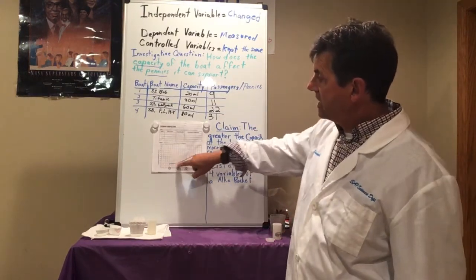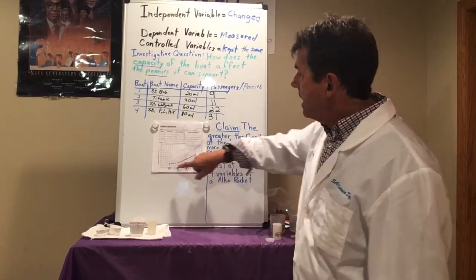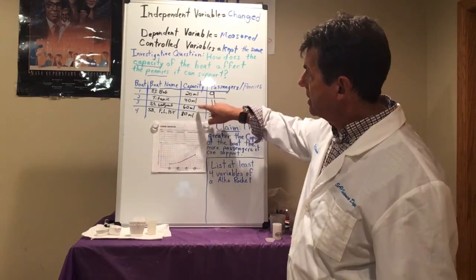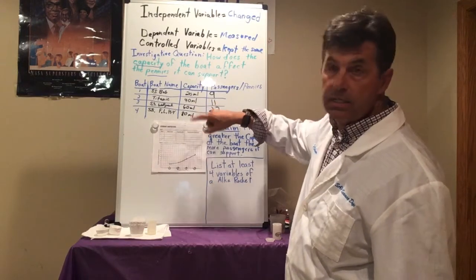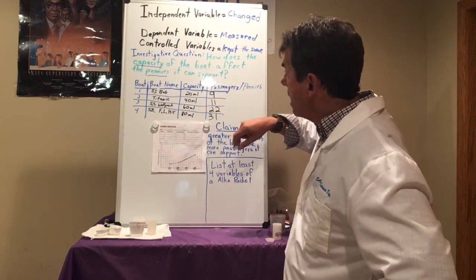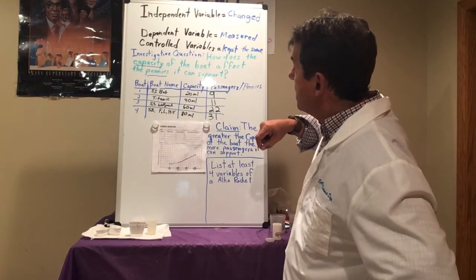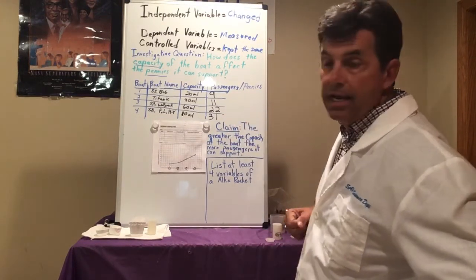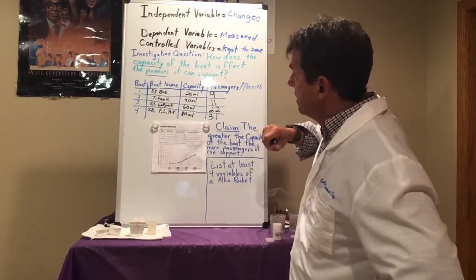Then you submitted graphs — thank you. If you haven't done that yet, go back and please submit it. You could see that the biggest jump was from the 40 milliliter boat to the 60 milliliter boat — that was the biggest increase in what it could hold. And then close to that as we went to the 80 milliliter one, but still the biggest increase was the 40 to the 60.